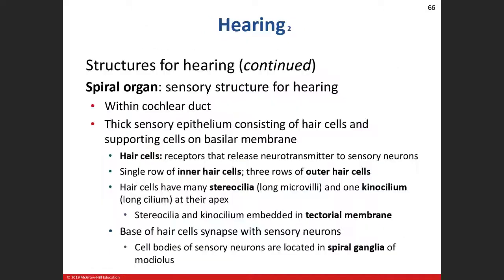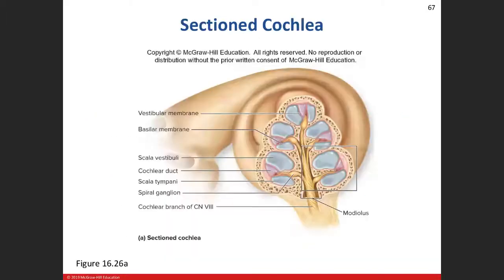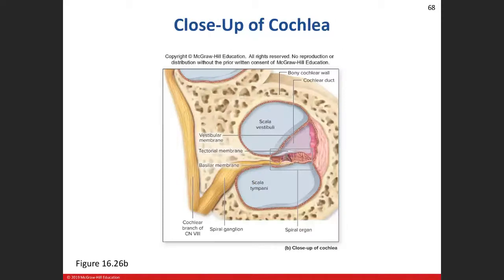For our hair cells there are two structures: the stereocilia, which are long microvilli, and then one special cilia called the kinocilium, which has a little knob at the top. Let me give you a transverse cut through the cochlea to review the anatomy.